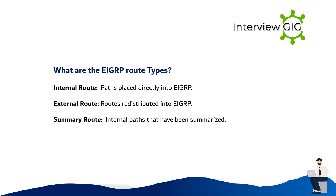What are the EIGRP route types? Internal route: paths placed directly into EIGRP. External route: routes redistributed into EIGRP. Summary route: internal paths that have been summarized.